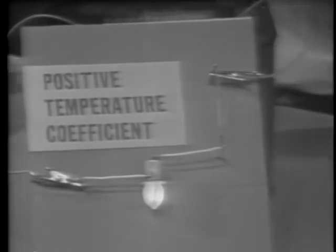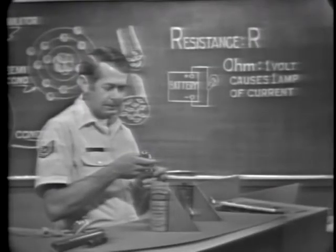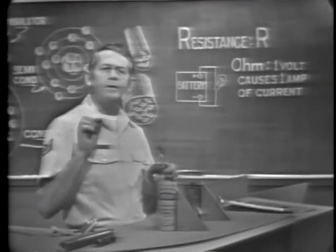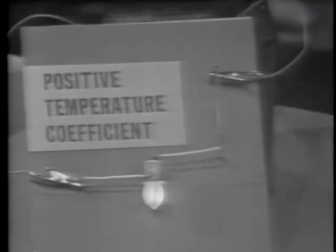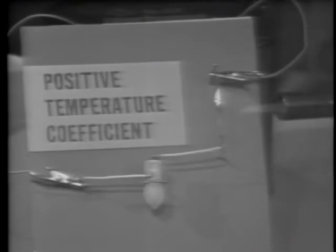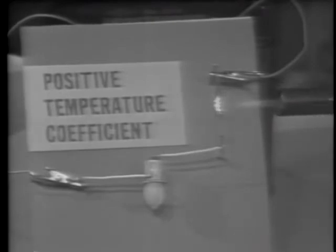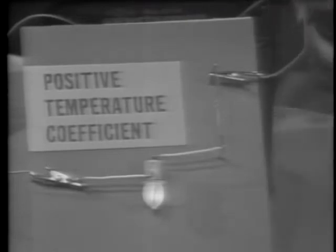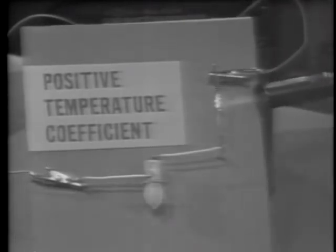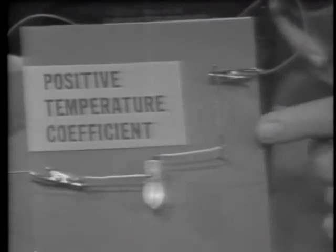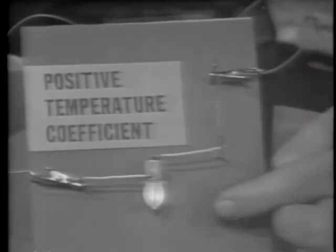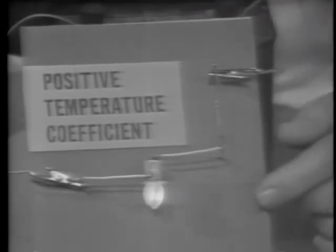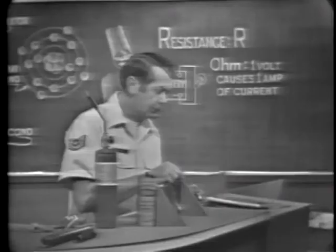To apply heat to the material I'll use a small torch. Watch the intensity of the bulb as I heat the tungsten — applying heat, notice that the bulb goes out. The resistance of the tungsten has gone up, which reduced the current through the bulb. When I take the heat away and the tungsten cools off, its resistance goes down and current flows through the bulb again. If resistance goes up when the material gets hotter, the material has a positive temperature coefficient. Tungsten then has a positive temperature coefficient.